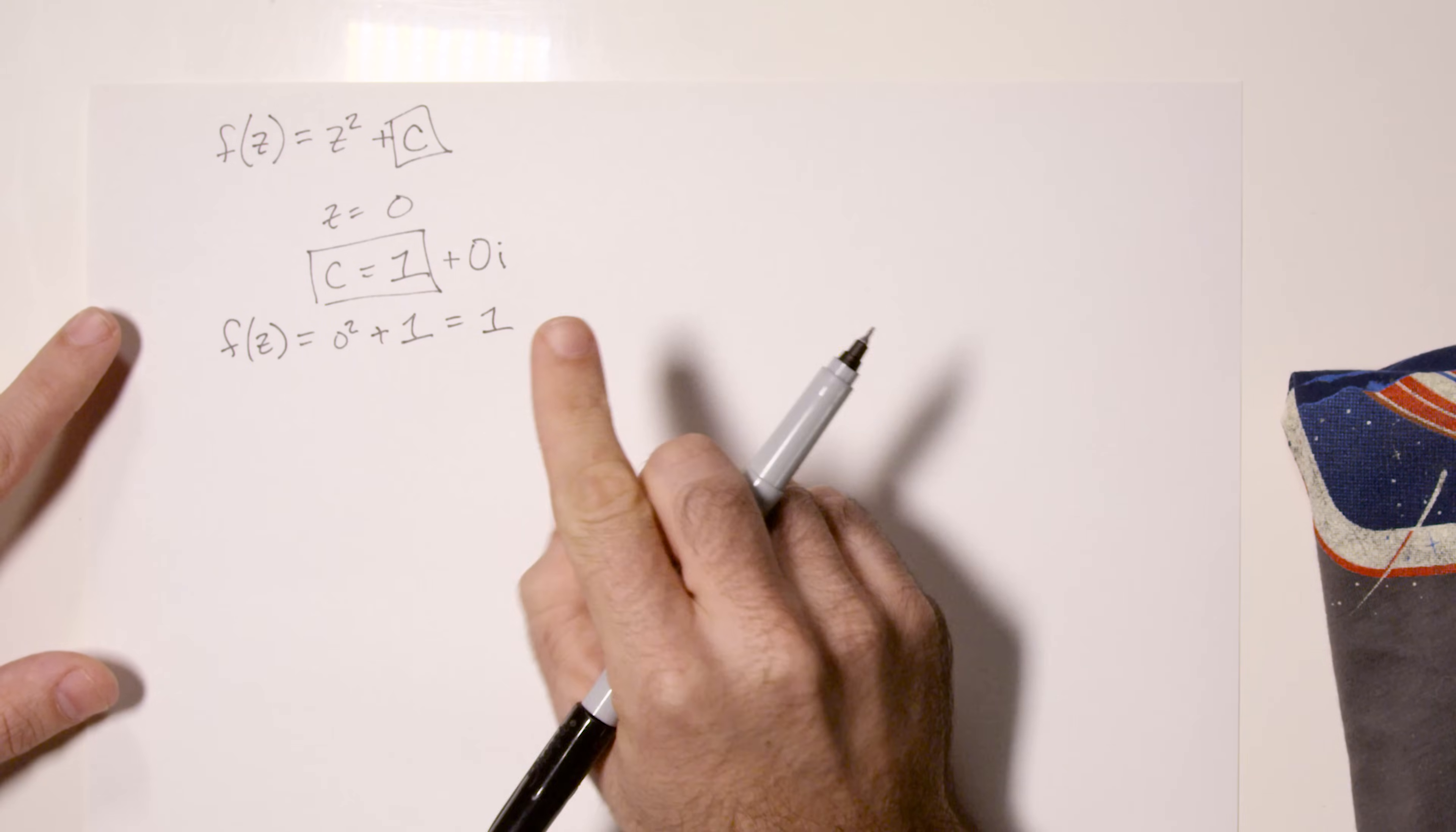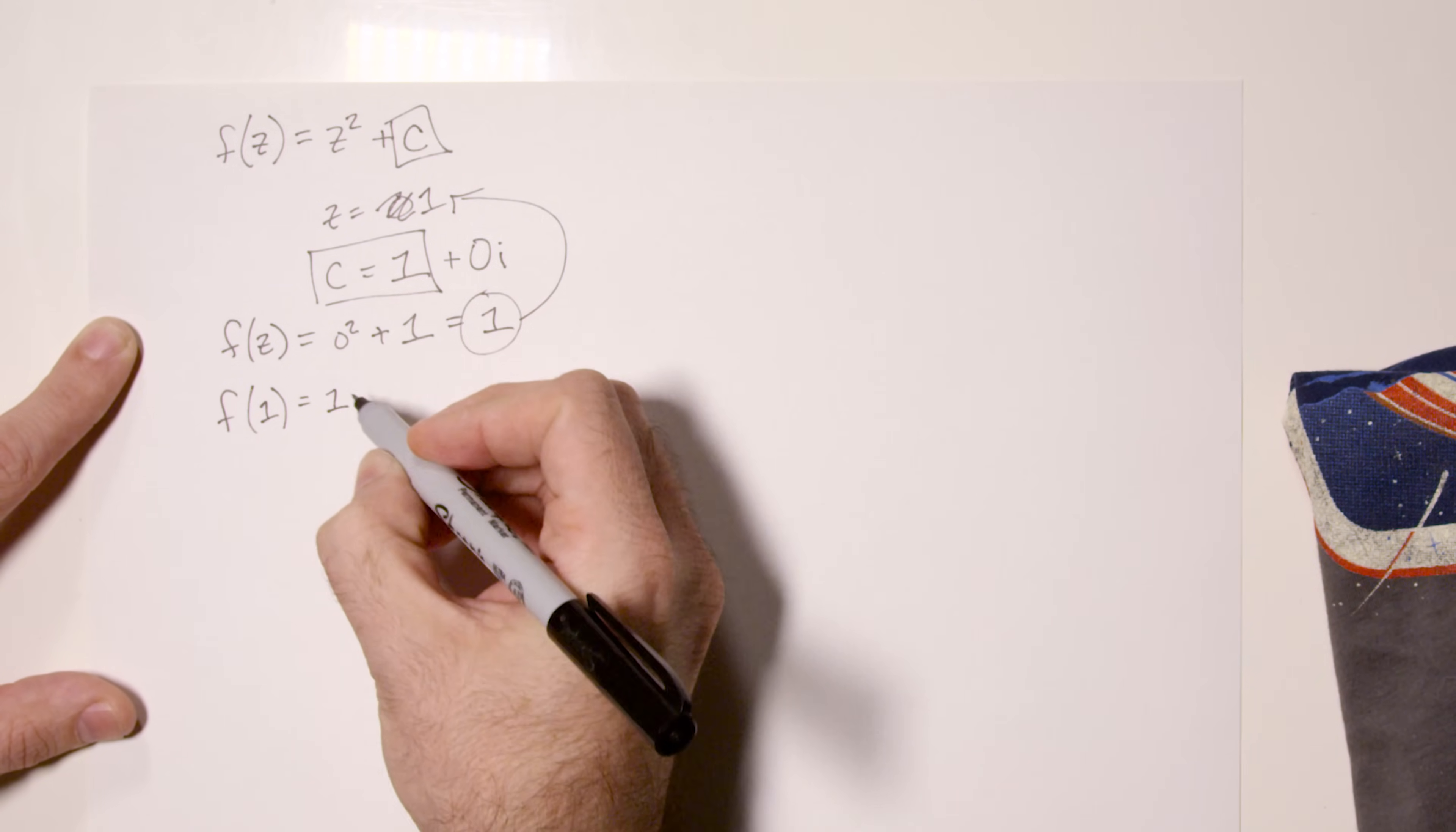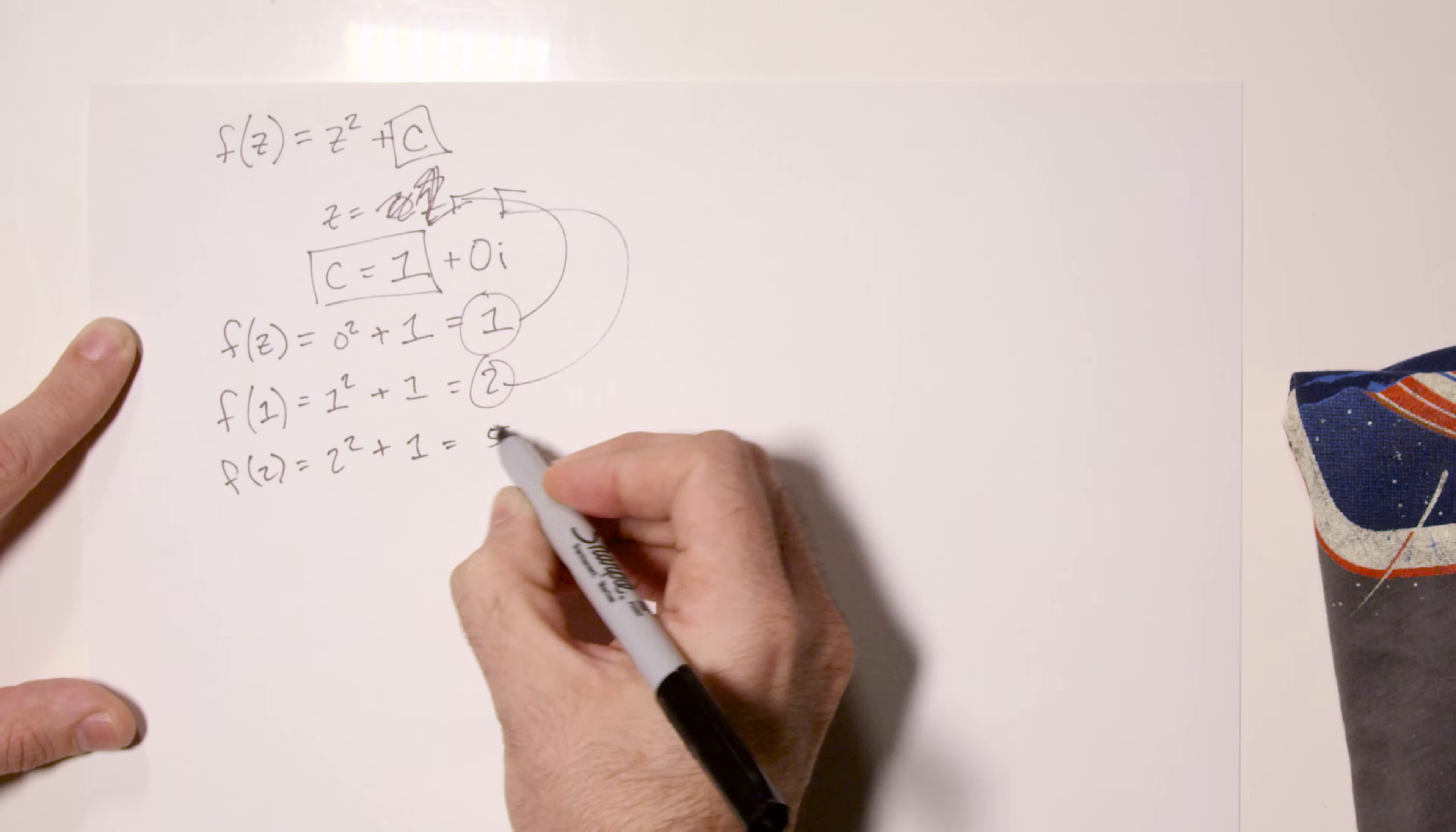Now we iterate this function, meaning our result becomes our new value of z. So now z is equal to one. So, what is this function at one? Well, if we need z squared, that means we're now using one squared, and we're adding c, which is one, and the answer we get is one squared, one, plus one, which is two. Now, this is our value for z, two. Alright, so what is f of two? Well, that's two squared plus one, which is five. Uh-oh.